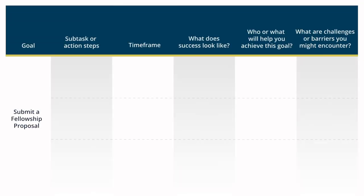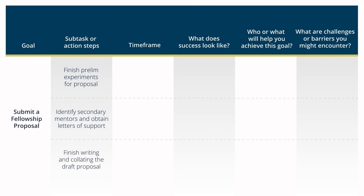In this example, the postdoc has three tasks she needs to finish before she can submit her fellowship application. One, finish her preliminary experiments that she will need to report on in the proposal. Two, identify secondary mentors that can be listed in the proposal's mentoring plan and obtain their letters of support. Three, finish writing the draft proposal she has already started working on.